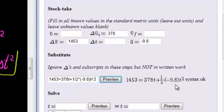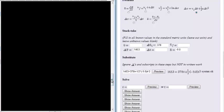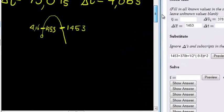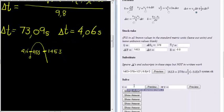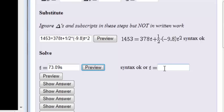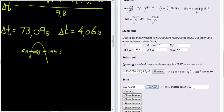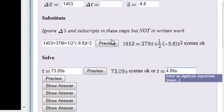Then we've already done all the effort to find the answers. And the answers that we got were delta t is either equal to 73.09 seconds, don't forget your seconds, preview just to make sure, that looks good, or 4.06 seconds. There you go, we've done this question perfectly.